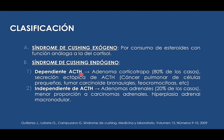Los dependientes de ACTH tienen como causa una neoplasia, asociada básicamente a una neoplasia pulmonar de células pequeñas. Como alternativa tenemos tumores carsinoides bronquiales o en algunos casos los feocromocitomas. Los que son independientes de ACTH están en menor proporción, asociados a carcinomas adrenales y hiperplasia adrenal macronodular.